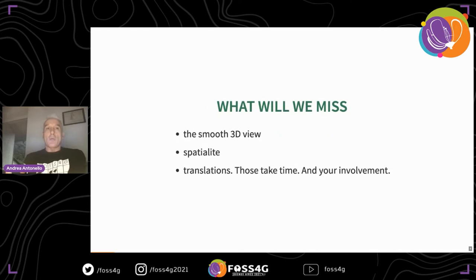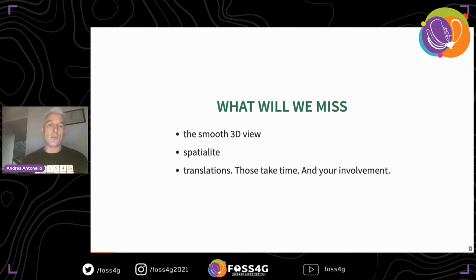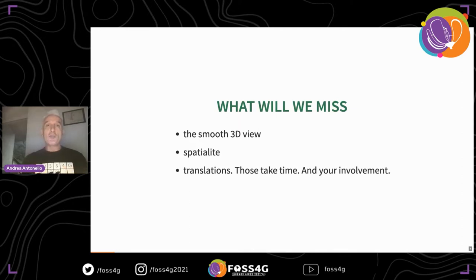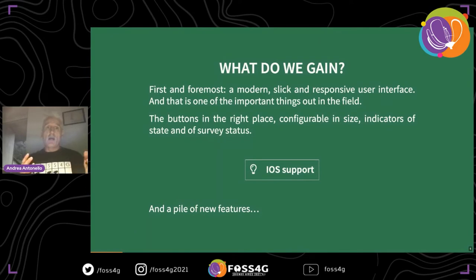What will we really miss? At the moment there are just two or three things. One is the 3D view, but talking to surveyors who use Geo Paparazzi, they were not really using it — it was nice to see but not really used in surveys. There is also SpatiaLite, which was a complex project with lots of build issues. Then GeoPackage came along and started to be used by everyone, so for mobile purposes GeoPackage is perfect and we implemented that part. There are also translations — Geo Paparazzi supported many languages, but they take time and involvement.